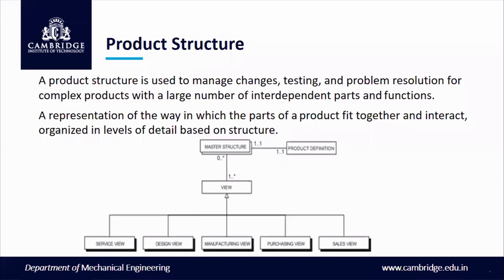In the product definition, everything which you need to know includes certain data, specifications, materials, views, quantities, qualitative aspects, sales, and purchasing views — any views which come under the product definition. You can see a master structure with the product definition having different views: service view, design view, manufacturing view, purchasing view, and sales view.